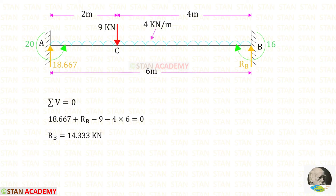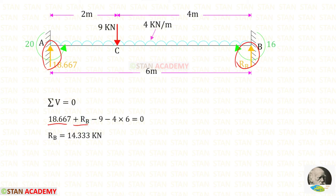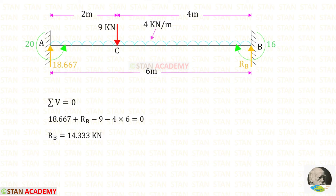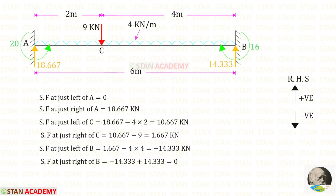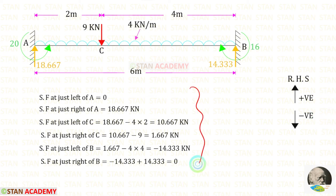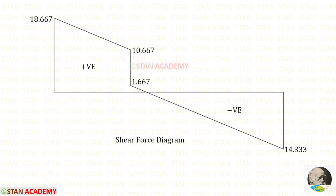Now applying sigma V equals zero to find RB: RA and RB act upwards (positive), the two loads act downwards (negative), and for the UDL we multiply by the distance. Finally, RB is 14.333 kN. Now we are going to draw the shear force diagram, finding shear force values from point A towards point B using the right hand side rule — upwards positive, downwards negative. Here you can see the shear force diagram.